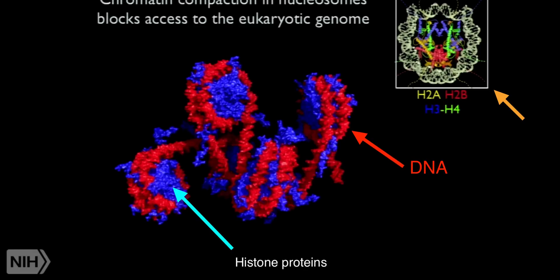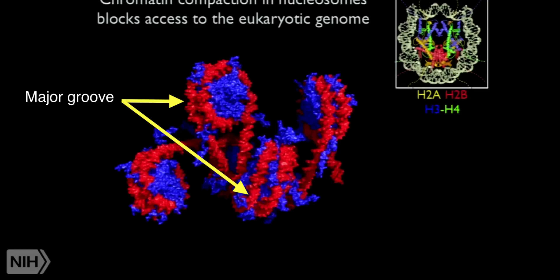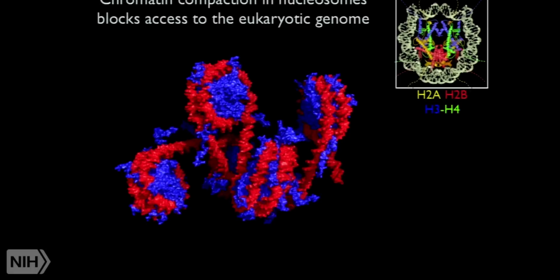The DNA is wrapped around the octamer, and when it is so wrapped, a lot of the information is not accessible. You can see the major groove — you can put your finger in the groove and read off about four or five base pairs, but then you run into the histones as you read into the part facing them. Many factors have poor recognition of nucleosomal DNA, with a few exceptions — some factors do quite well on nucleosomal DNA, and some even prefer nucleosomes. But by and large, many of them would much rather have the DNA free.